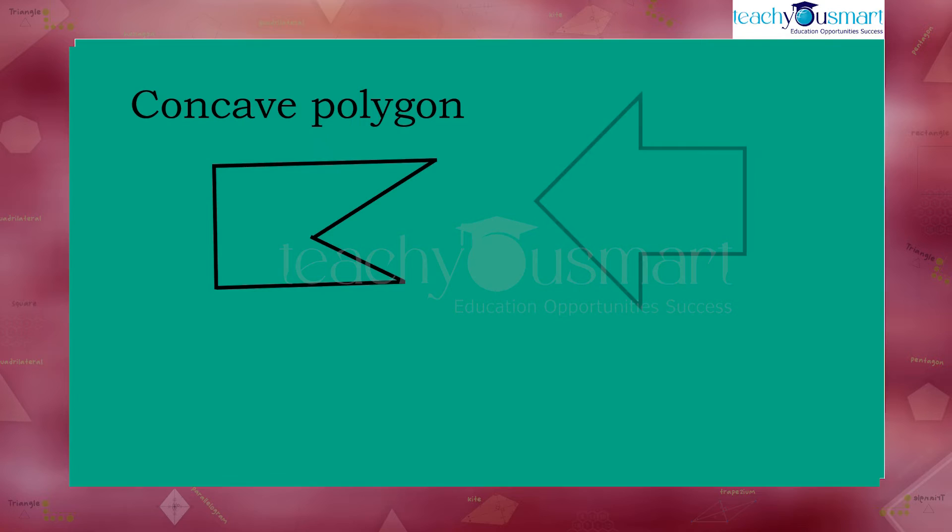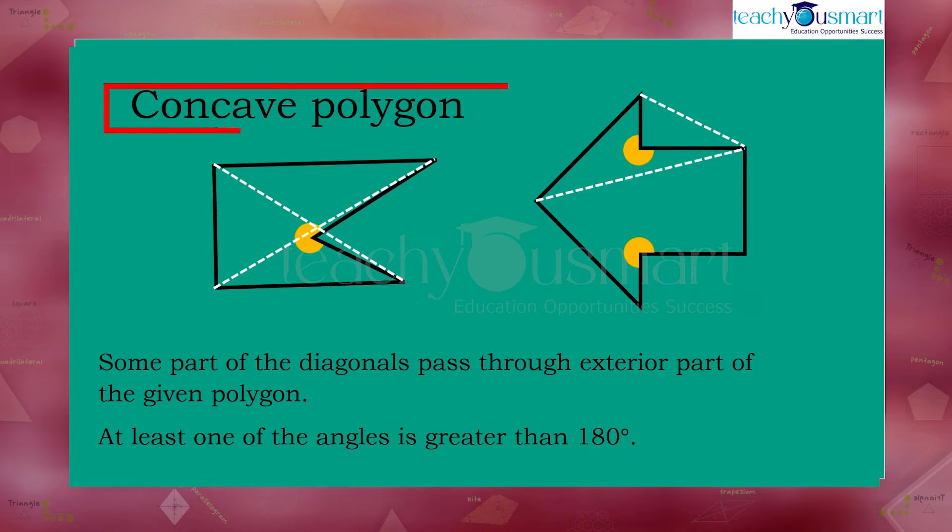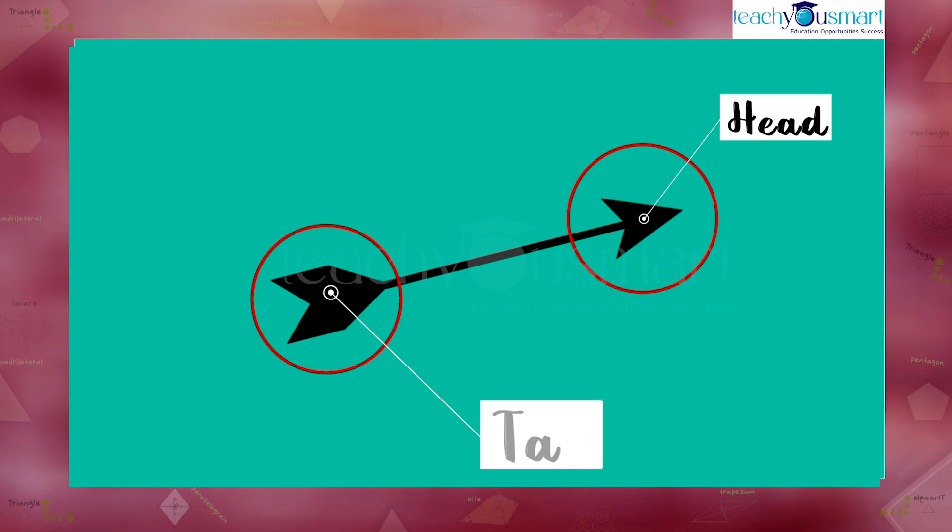Here some part of a diagonal passes through the exterior part of the given polygon. At least one of the angles is greater than 180 degrees. If some part of the diagonal lie in the exterior part of the polygon or at least one of the angles is greater than 180 degrees, then it is called a concave polygon. Example: head and the tail of an arrow.